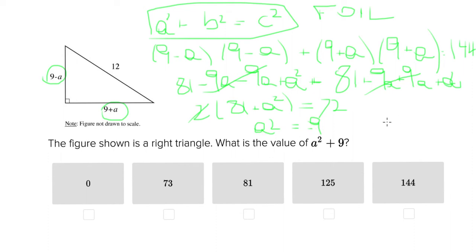So the value of a would then be 3i or 3 times the square root of negative 1 which is an imaginary number. Now if you think this is too difficult for you just remember that a squared equals negative 9. So if we're going to be solving this problem, the figure shown is a right triangle what is the value of a squared plus 9. You know this value for a squared is going to be negative 9 and negative 9 plus 9 would equal 0.